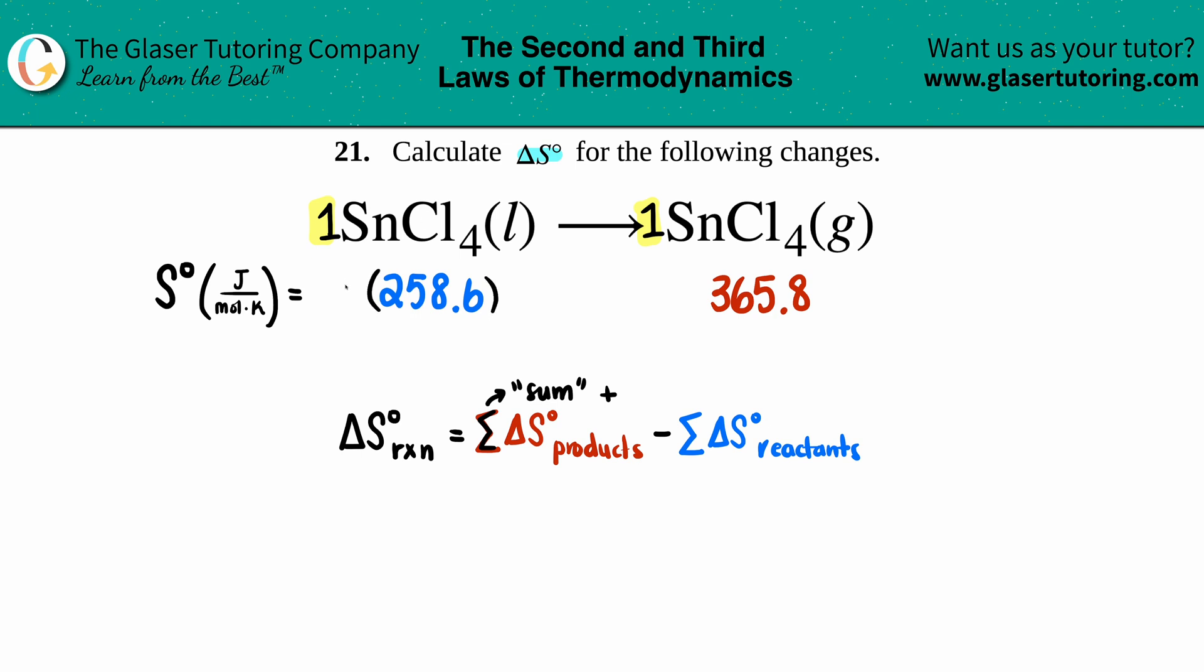Technically we should times this by one just to show you what we're doing every single time. For example, if there was two of these here, I would take this standard value that I found in the back of the textbook and multiply it by two. But in this case they're just going to be the same number.